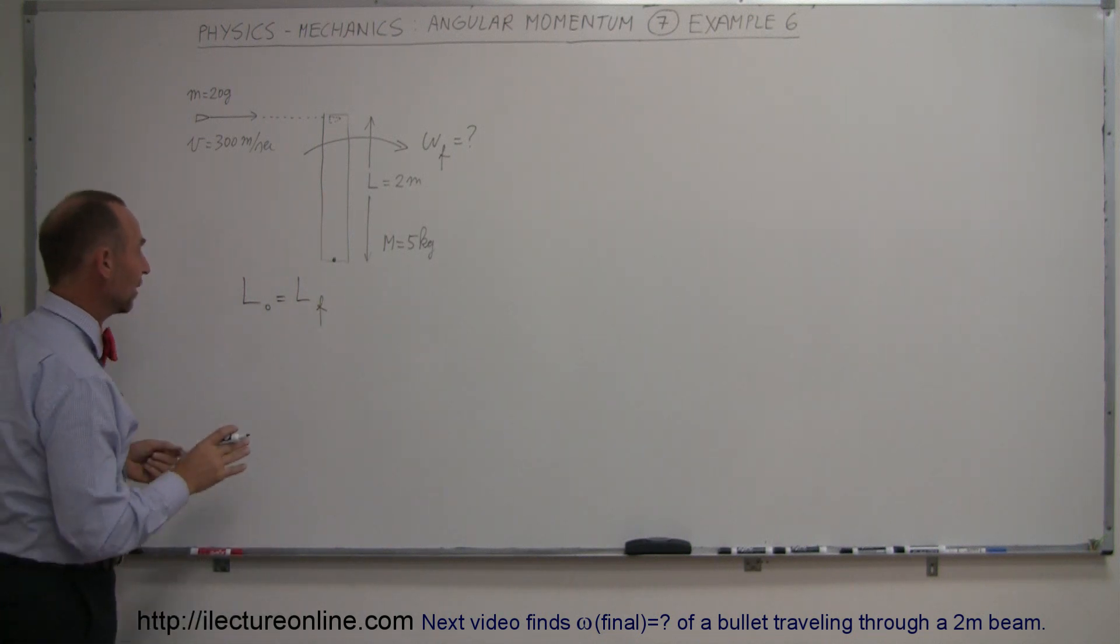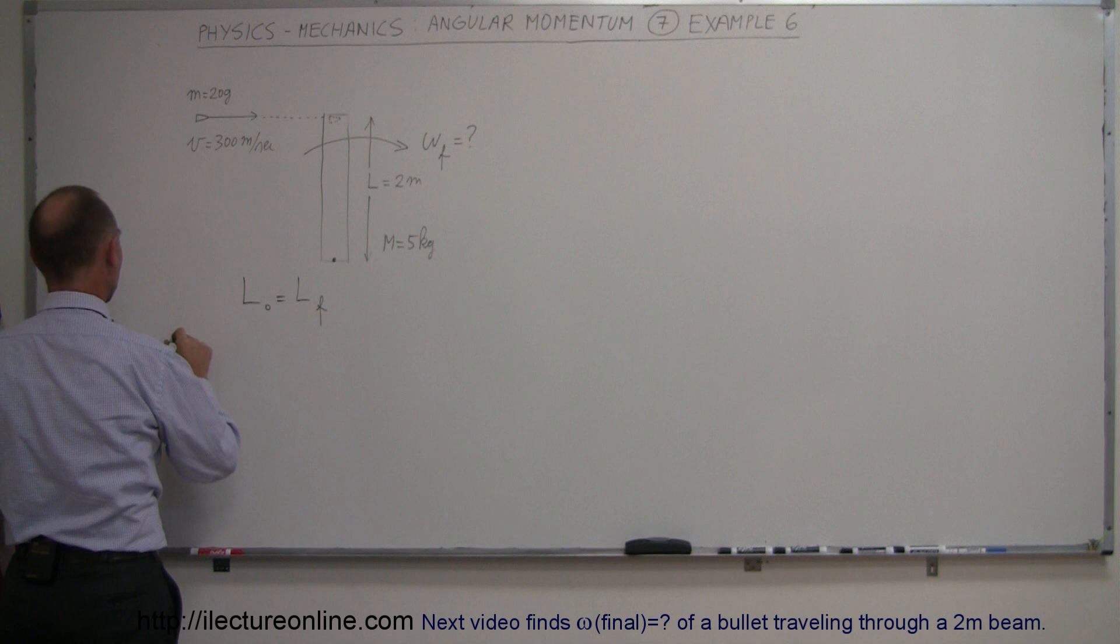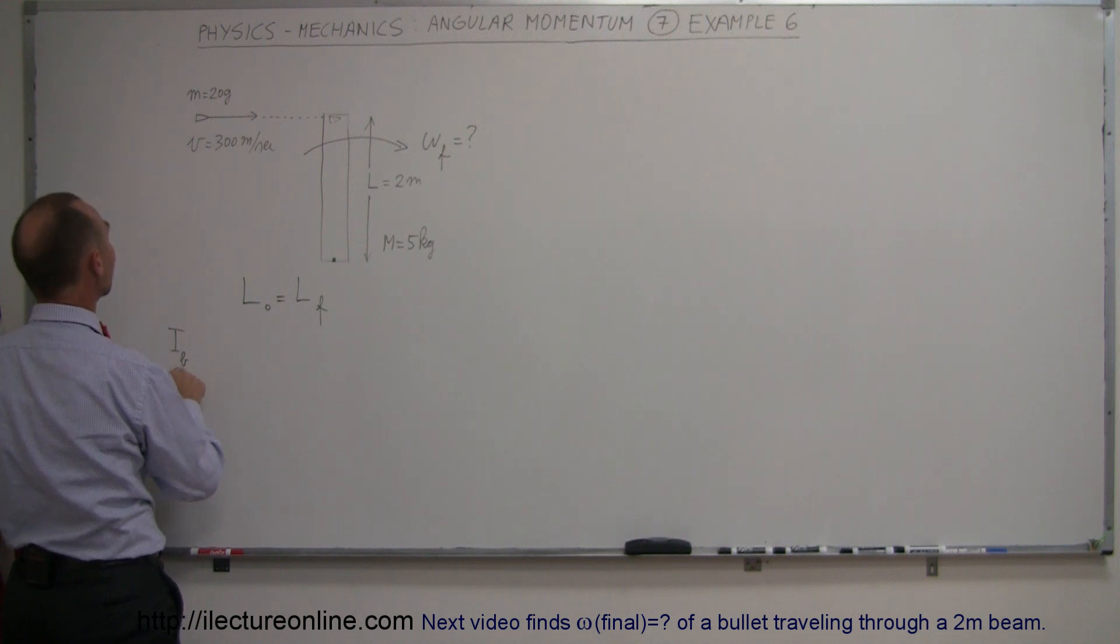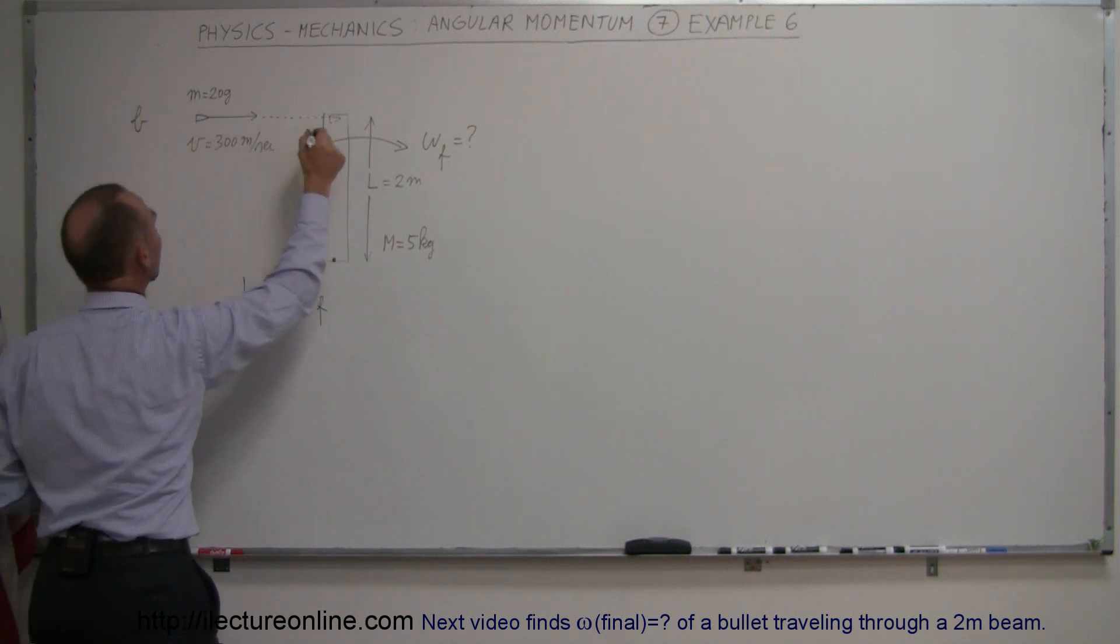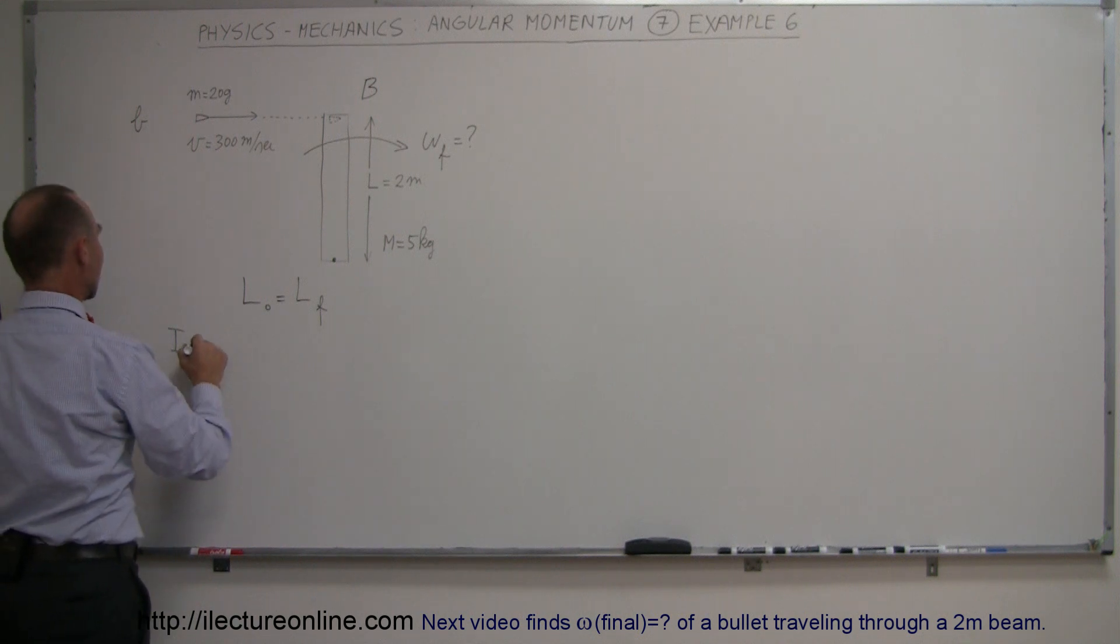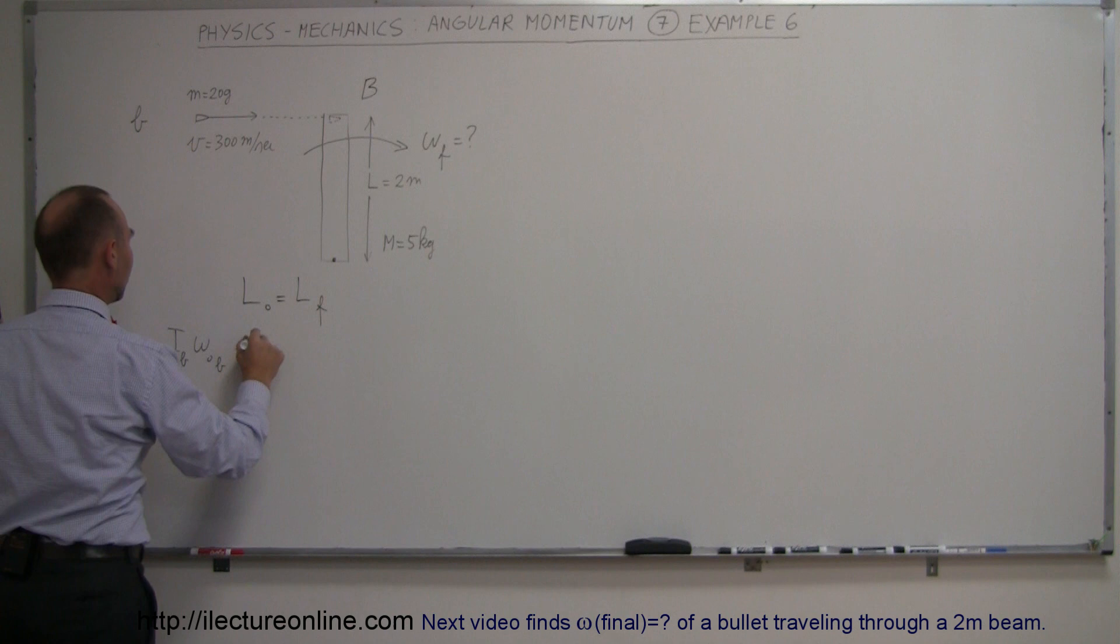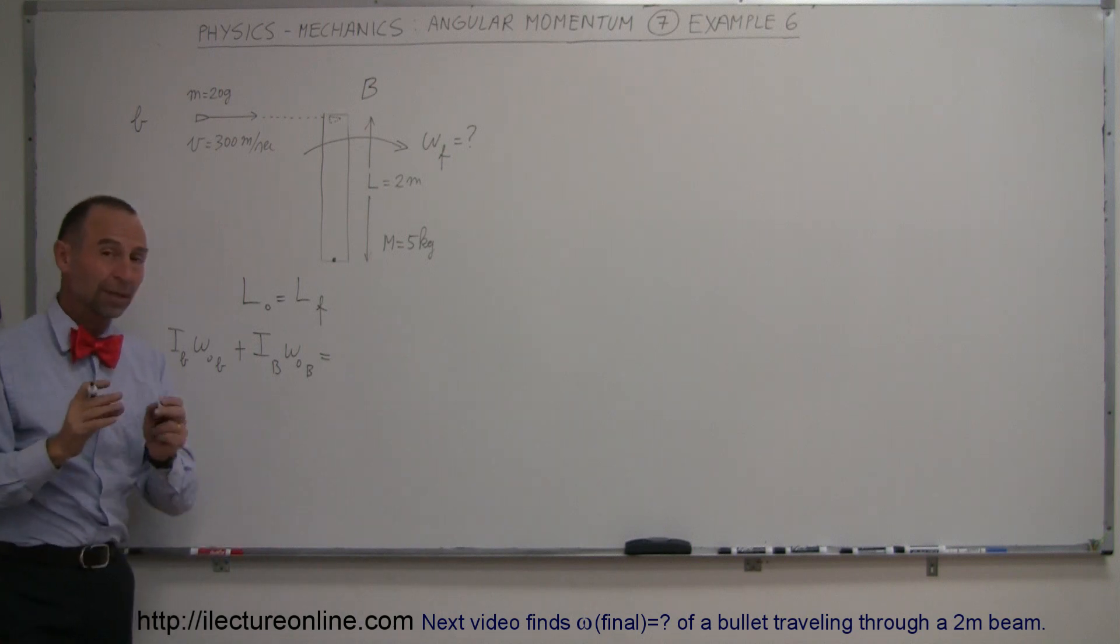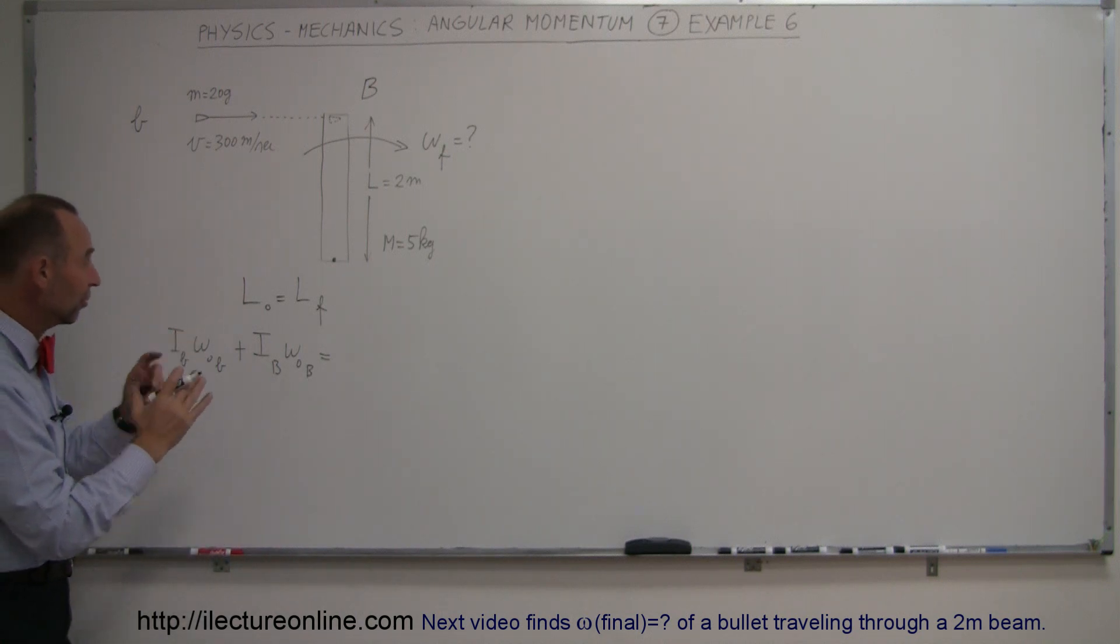So what is the initial angular momentum? Well, we have I of the bullet (I'll use small b for bullet, big B for beam). So I of the bullet times omega initial of the bullet plus I of the beam times omega initial of the beam equals...